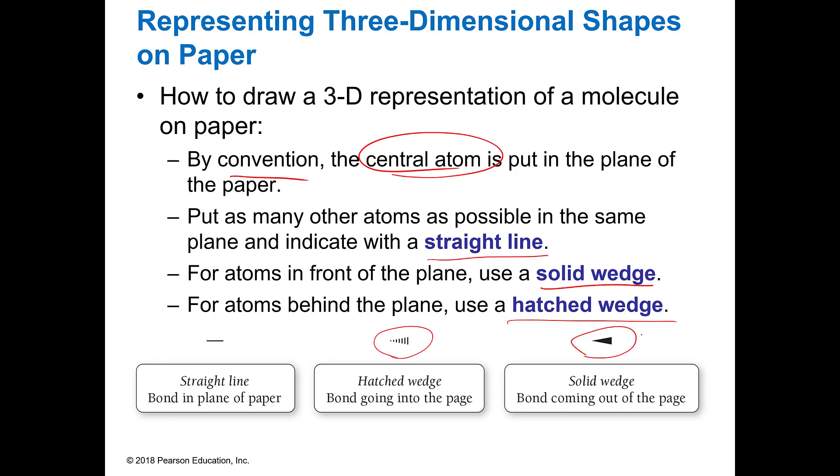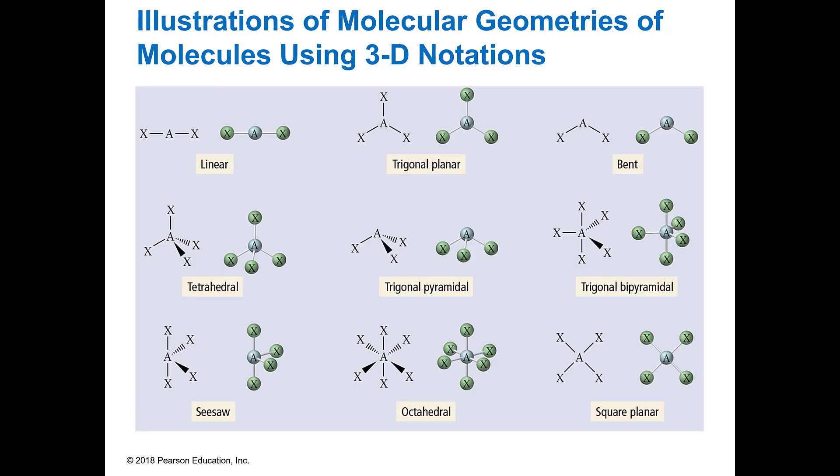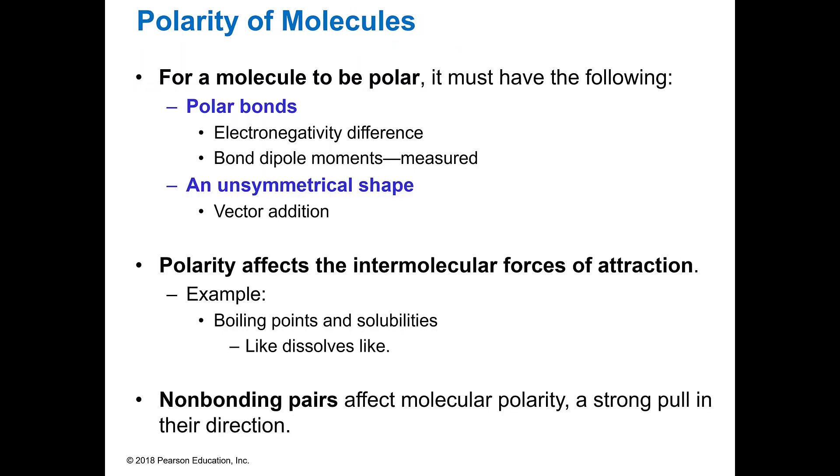So there's your hatched wedge, there's your solid wedge. Here you can see different representations. If they're all just lines, that means they're all in the same plane of the page. But you see your hatched or completed wedge and that shows you which direction these are, because remember they're not all flat. Some of them are sticking out, some are coming back.